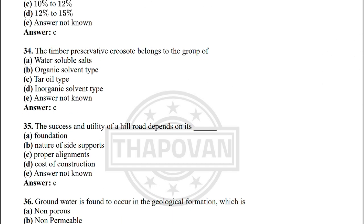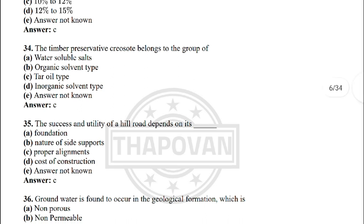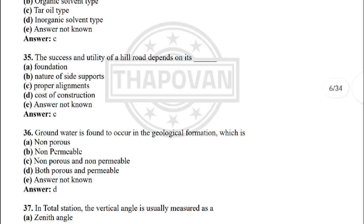Next: the timber preservative creosote belongs to the group of — option C: tar and oil type. Next: the success and utility of a hill road depends upon — option C: cost of construction.